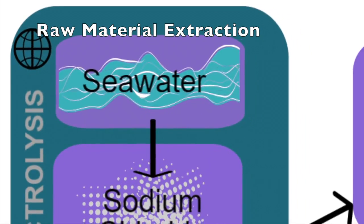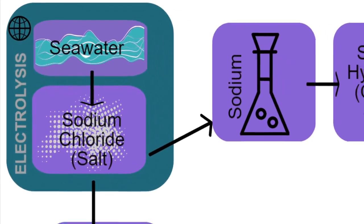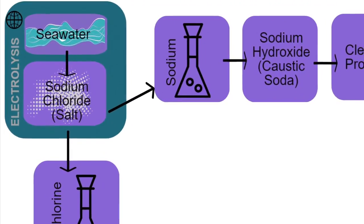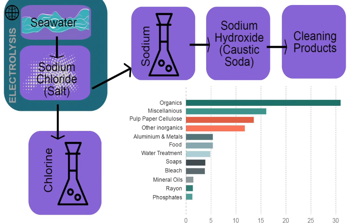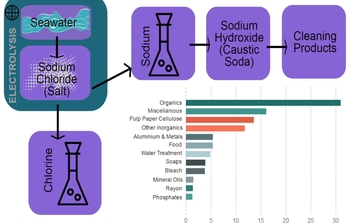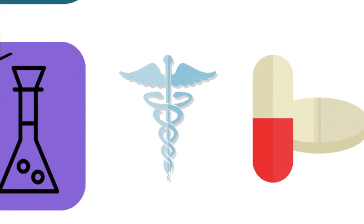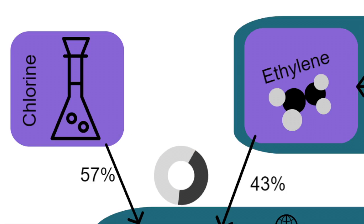Products made of PVC begin their journey overseas with the extraction of salt, an abundantly available resource. Using a process called electrolysis, electricity is passed through a salt water solution to produce chlorine and caustic soda in roughly equal parts. Caustic soda is used in a wide range of industrial processes for the food industry, aluminium and textile production, soap and other cleaning agents. Chlorine also has a diverse range of uses such as disinfection, water purification, pharmaceuticals and polymer production, including of course PVC.